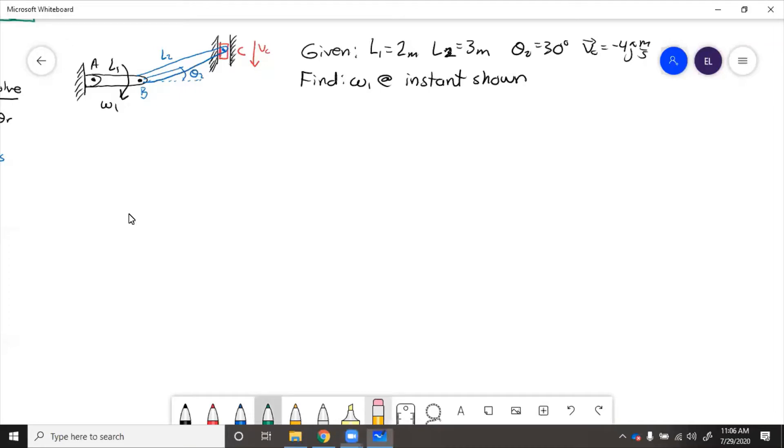So just looking at this, there's a shortcut. We know that since velocity of the slider is going straight down at vc, which is given here, equals negative four meters per second.